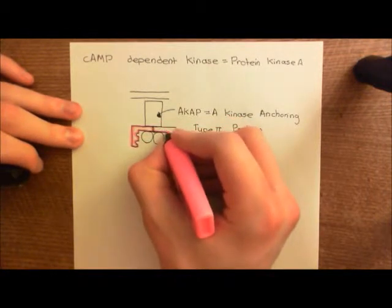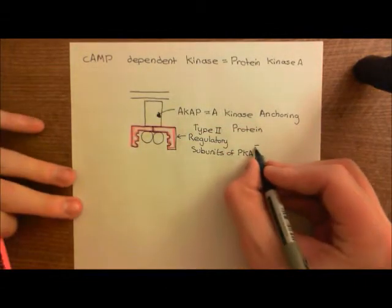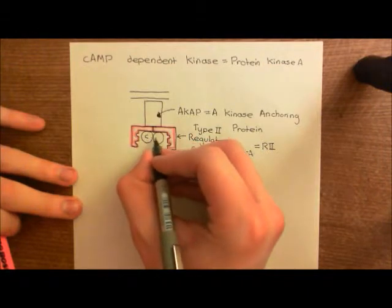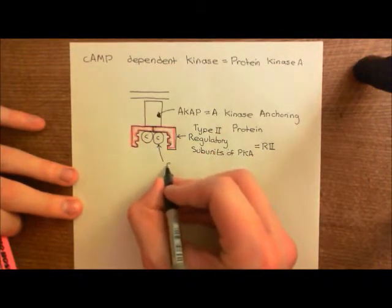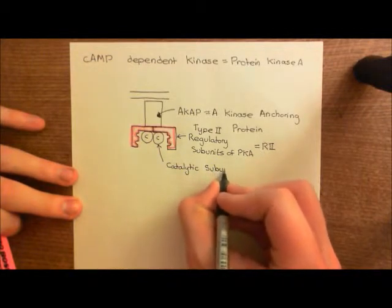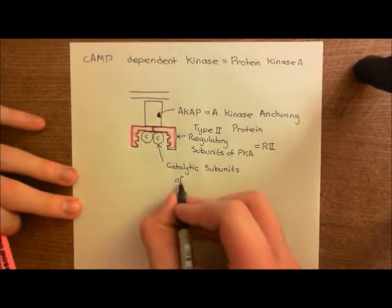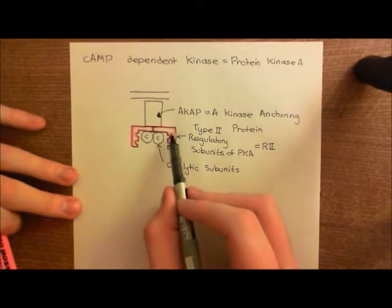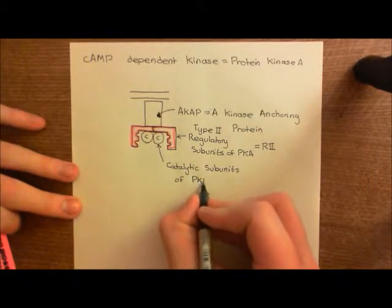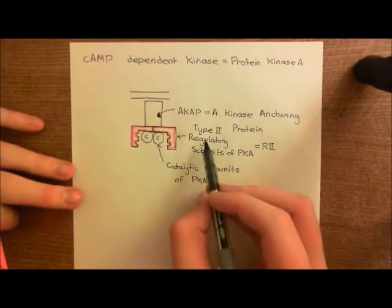The type 2 regulatory subunits of protein kinase A are often denoted as R2 proteins. You put two R2 proteins together in a dimer and attach two catalytic subunits. To make a type 2 protein kinase A enzyme, you need two type 2 regulatory subunits plus two catalytic subunits. The catalytic subunits are not different between type 1 and type 2 protein kinase A.